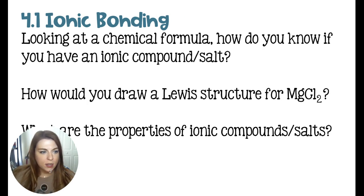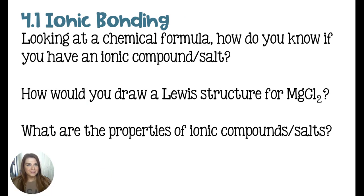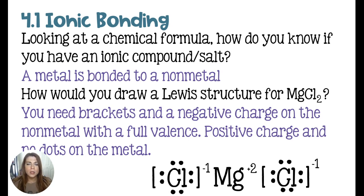Here is the first set of questions, which is on ionic bonding. Looking at a chemical formula, you should be able to know if it's an ionic compound — or a salt, as we call it. You can tell by knowing that you have a metal bonded to a non-metal. Metals come from the left side of the periodic table and non-metals come from the right side.